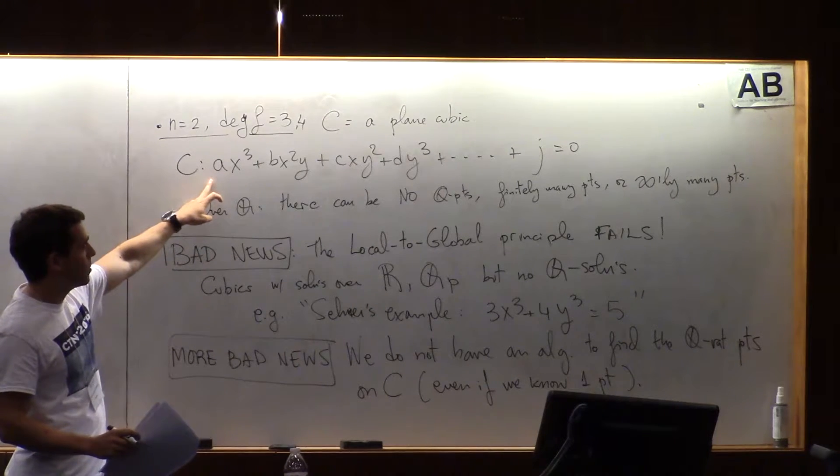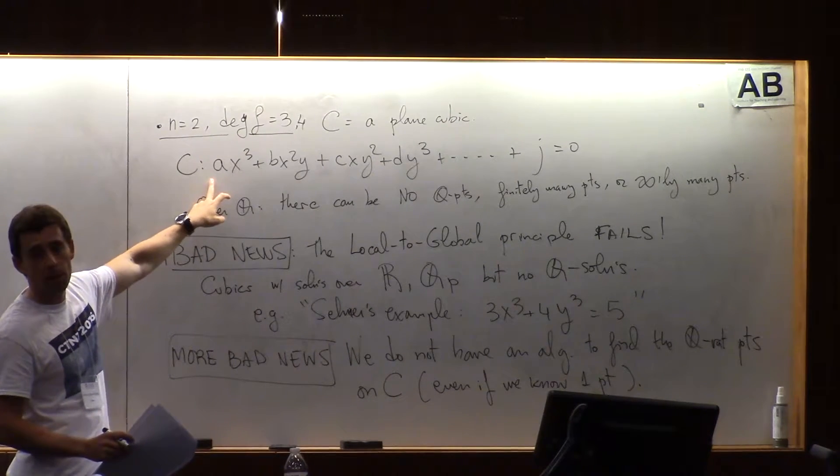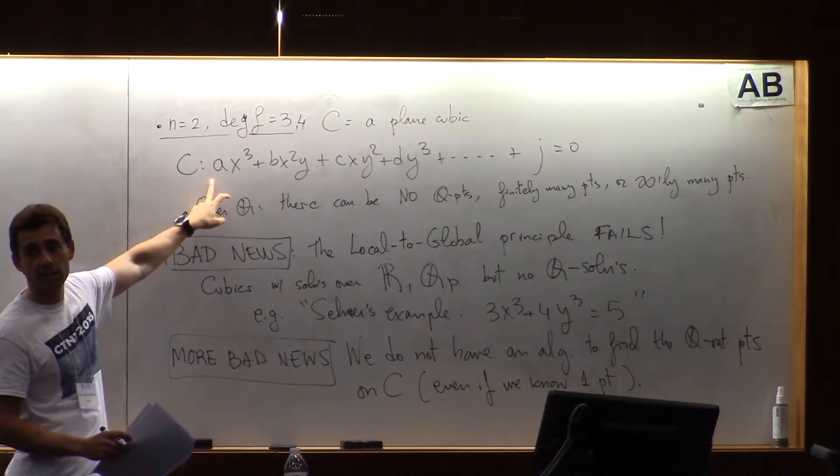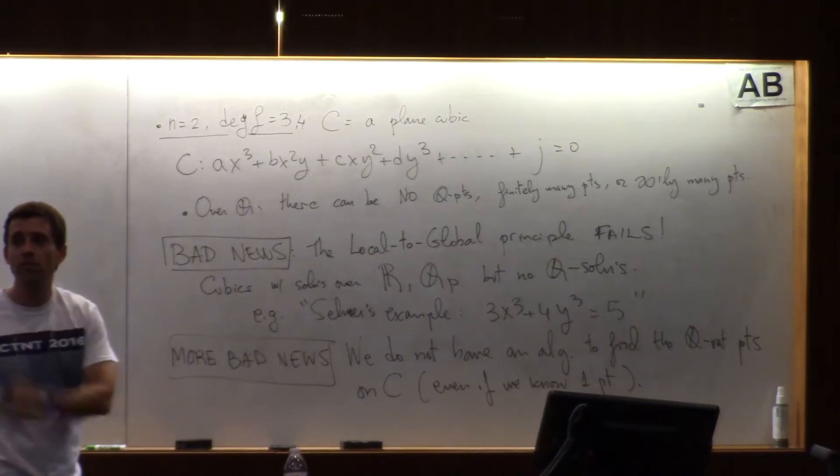So an elliptic curve now is a cubic, a plane cubic that is non-singular and has at least one point. But then we defined it in some very short way before.